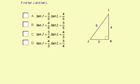Find the tangent of J and the tangent of L. So we have triangle J, K, L, and we have 3, 4, and 5 for sides of the triangle.